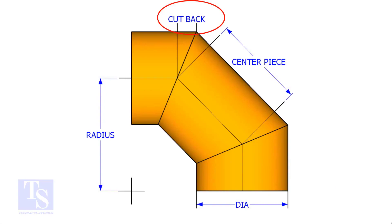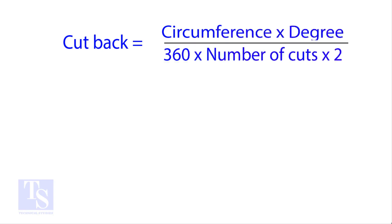The standard method to calculate the cutback is: Circumference into the wanted degree, divided by 360 into number of cuts into 2.